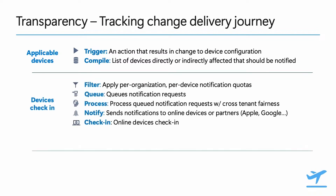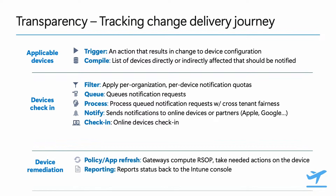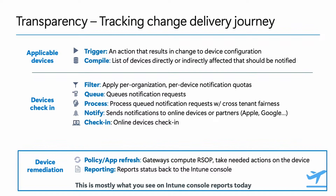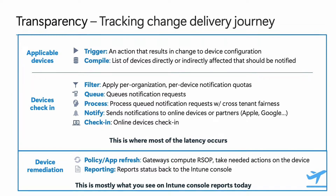Next is notifying devices to check in. There might be multiple changes going on at once in a given organization, so there is some work behind the scenes to reason through all the changes being triggered and ensure we maximize the reach to affect as much change for as many devices as fast as possible. We rely on and partner with platform-specific systems for that last-mile delivery, much like a parcel service sometimes relies on the local post office for actual home delivery. And last is what I call the device remediation step — whatever the reason for the device check-in, Intune will compare actual versus desired device configuration, apply all necessary changes, and report status back.